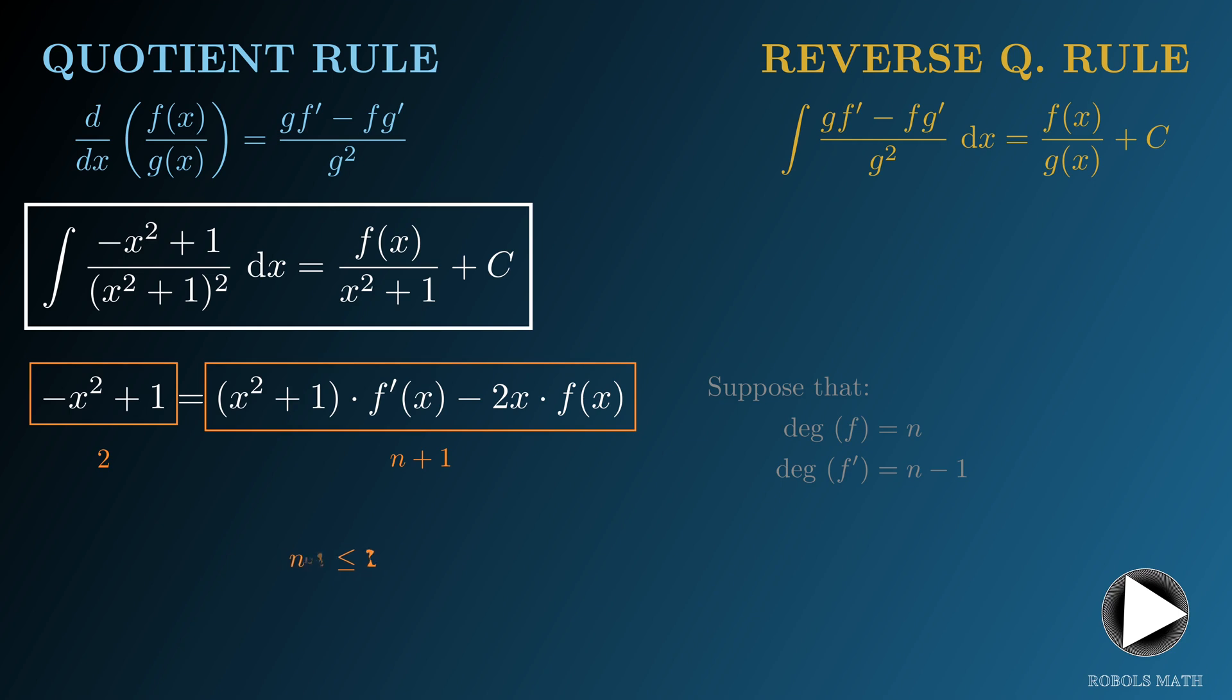Thus, n is less than or equal to 1, which means that f is a linear function or just a constant. Suppose that f of x is mx plus b, then f prime must be m.